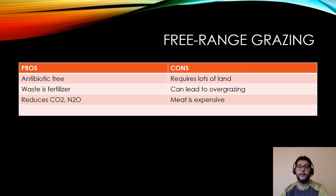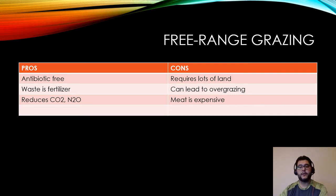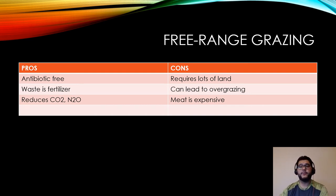With free-range grazing, there are quite a few pros. Number one, you're not going to be using any antibiotics, which is a benefit. Also, the animal waste becomes fertilizer — since they're grazing around, they naturally fertilize the grassy areas as they walk. It's a very easy, natural cycle, and of course it's going to reduce your carbon dioxide and nitrous oxides, your NOx chemicals that can end up in the atmosphere.